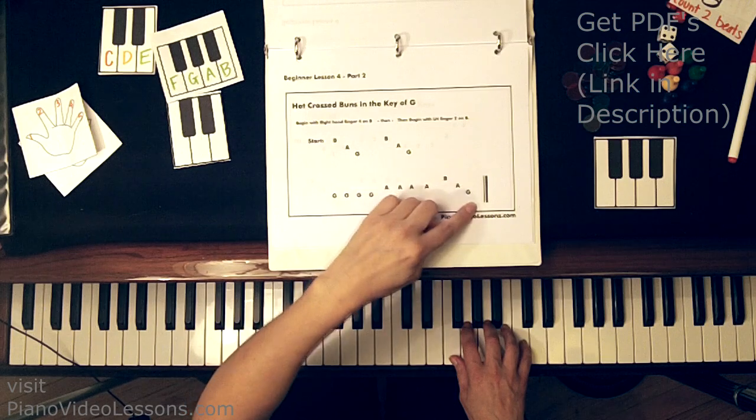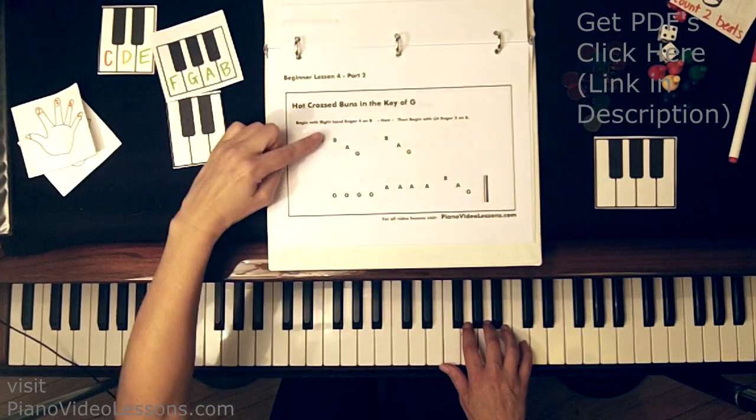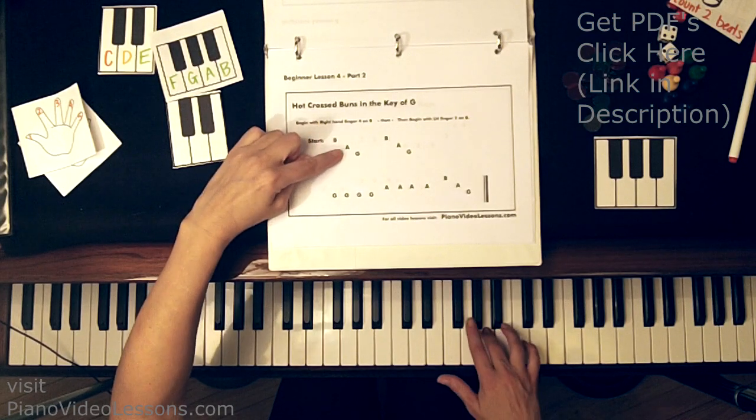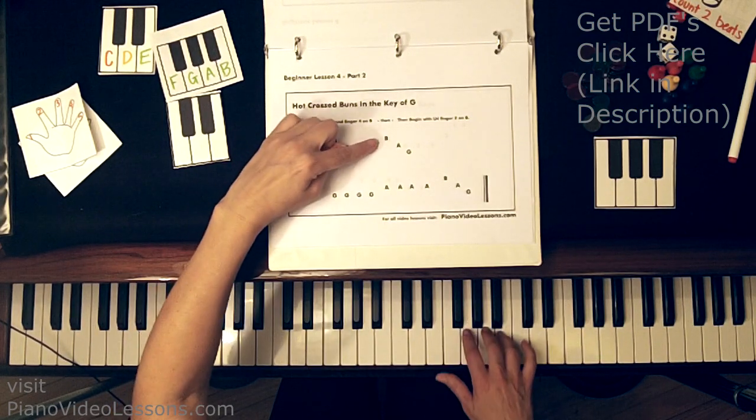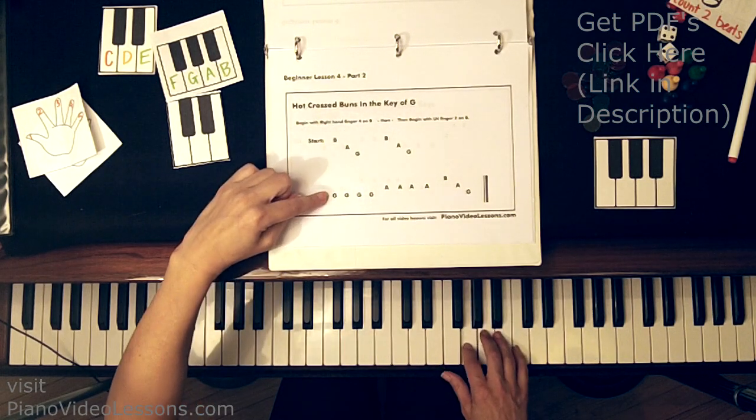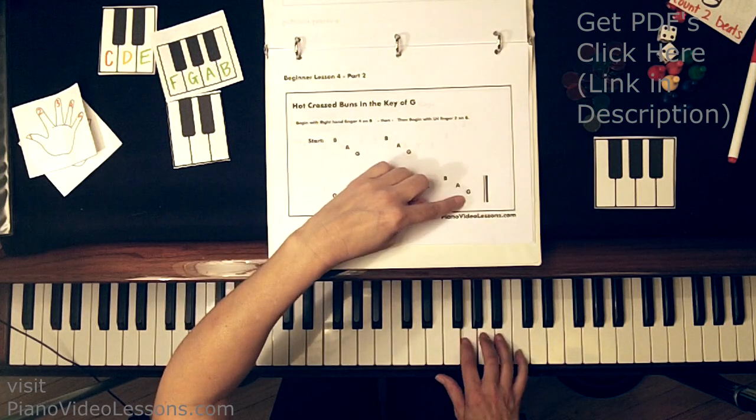B, A, G, and B, A, G at the end. And then we'll have 4 G's and 4 A's. So let's try that, beginning with finger 4. Here we go. B, A, G. B, A, G. G, G, G, G, A, A, A, A, B, A, G. Very good.